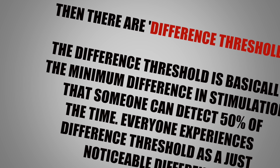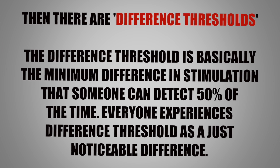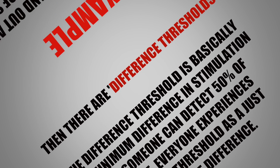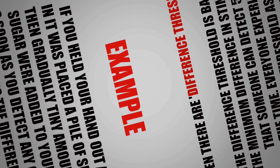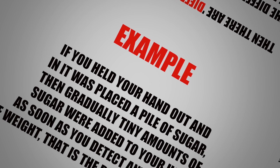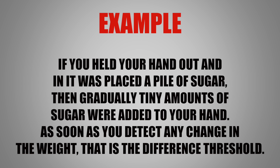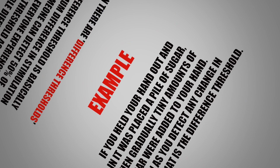The difference threshold is basically the minimum difference in stimulation that someone can detect 50% of the time. Everyone experiences difference threshold as a just noticeable difference. For example, if you held out your hand with a pile of sugar, then gradually tiny amounts of sugar were added to your hand — as soon as you detect any change in the weight, that becomes a difference threshold.